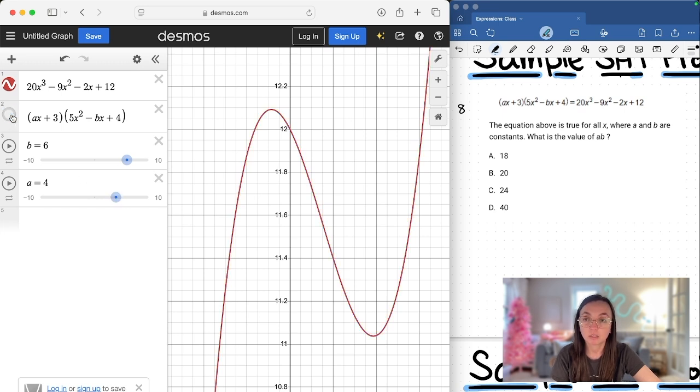I'm gonna flash the blue on and off. So this is telling me that a is 4, b is 6. The problem is asking what is a times b. We're going to do a times b, it's going to give us 24. The answer is C.